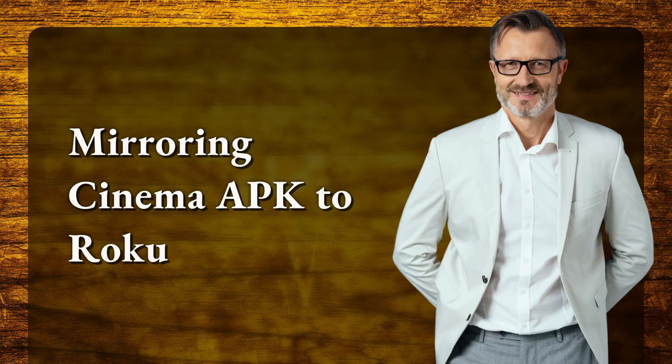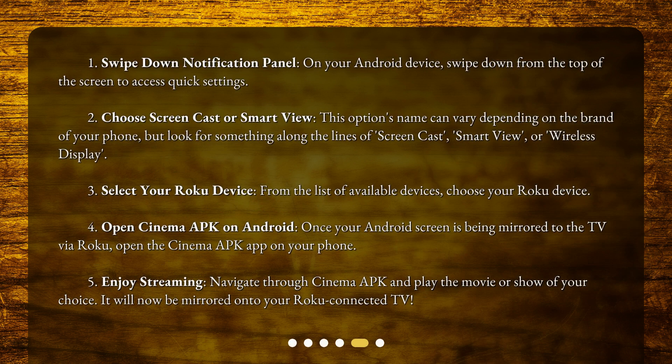To start mirroring, swipe down from the top of your Android screen to access Quick Settings, then choose Screencast or Smart View. This option's name can vary depending on the brand of your phone, but look for something along the lines of Screencast, Smart View, or Wireless Display. Then select your Roku device from the list of available devices.